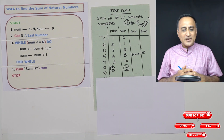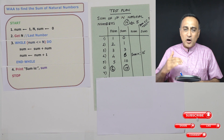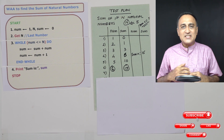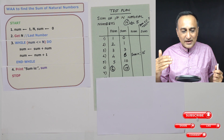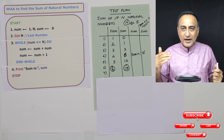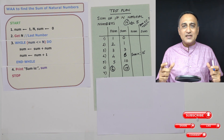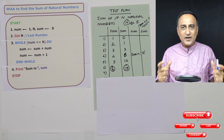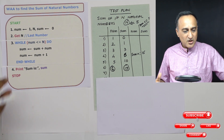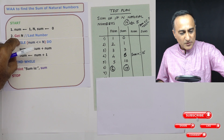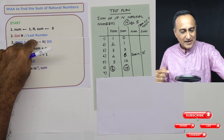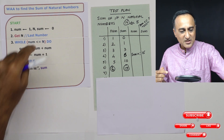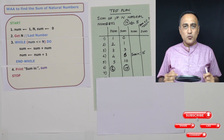So I hope you get an idea of how to find the sum of natural numbers using the while-do-end-while construct. Whatever is between while and end-while keeps getting executed as long as the condition is true.